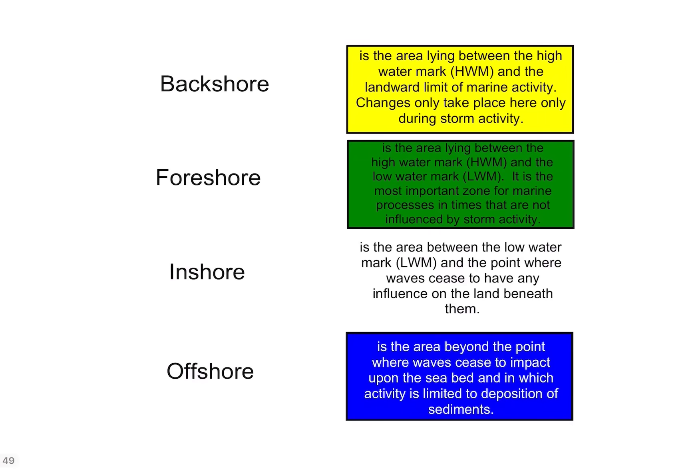Thinking about key terminology to do with coastal landscapes, the first four words are backshore — the area between the high watermark and the landward limit — foreshore, the area between the high watermark and the low watermark, inshore between the low watermark and the point where the waves don't really have any influence, and offshore, the point beyond where the waves cease to impact upon the seabed.